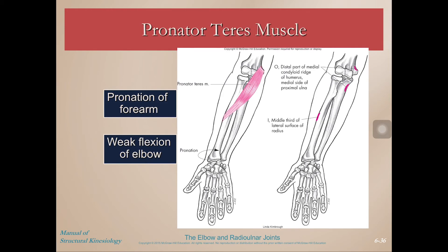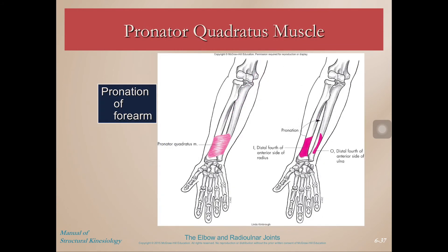Pronator teres does just what the name says — it pronates. We see it arising from the medial epicondyle with fibers crossing over the radial-ulnar joint onto the radius. When it contracts it puts you into pronation, and it also does weak elbow flexion because it crosses the elbow. Pronator quadratus is at the distal portion of this joint; it will not do any elbow flexion, but it does do pronation.